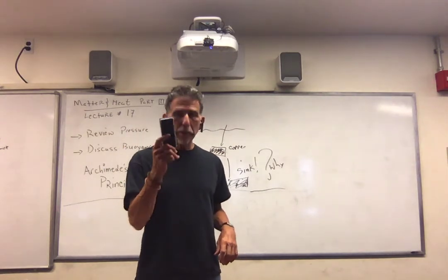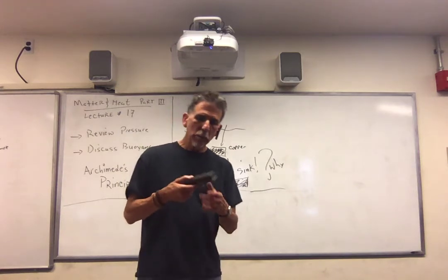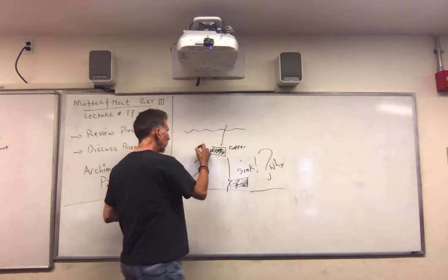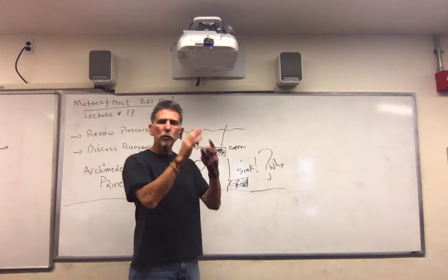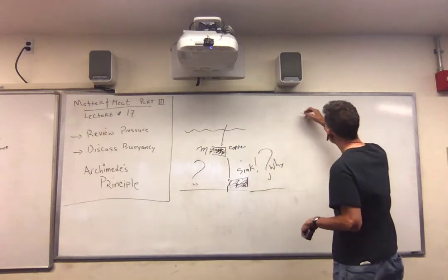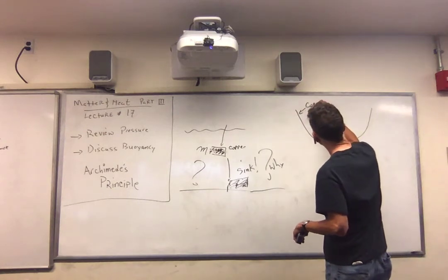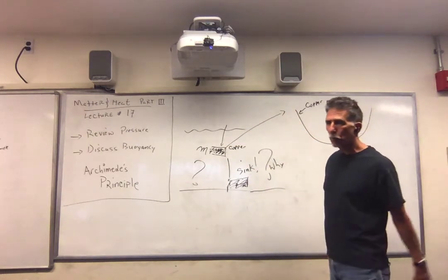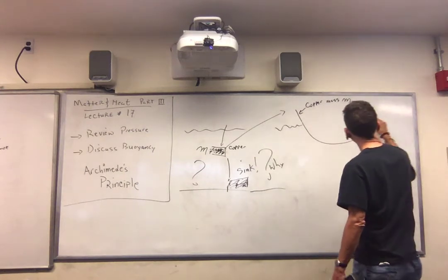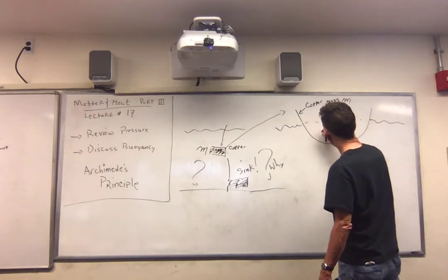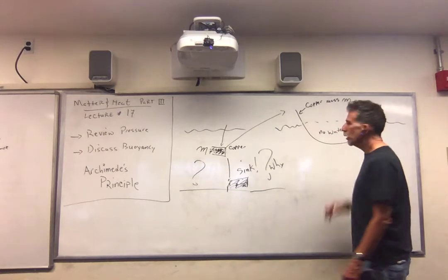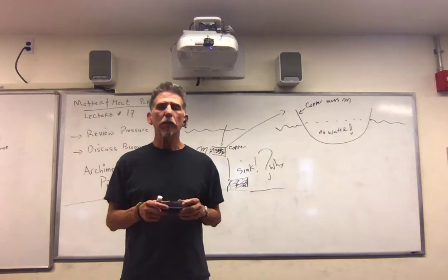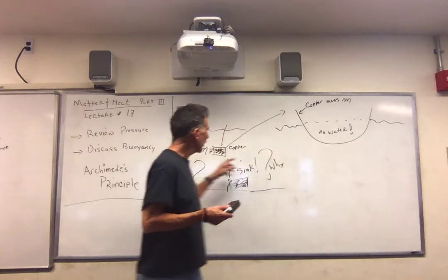Now, same piece of copper, same mass, same weight. Here's what I'm going to do: I'm going to take this piece of copper, take my hammer, and bang it and bang it until I make a very thin sheet of mass M — same piece of copper as before. Now I'm going to put this in the water. Here's the water, and this part — there's no water inside. Same mass, same weight. What happens to the piece of copper? The copper floats. So in one instance it floats, and in the other instance it sinks.